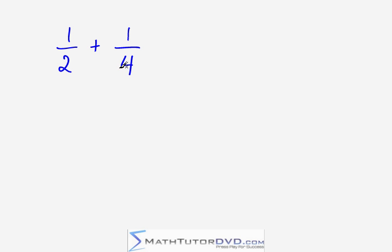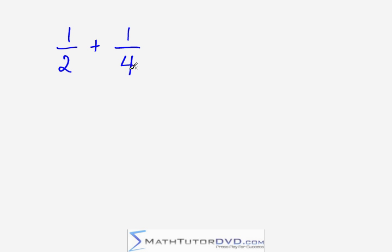Anytime you add or subtract two fractions, the number one rule that you need to know is that the denominator — which is the bottom number on these fractions — must be the same. So if they're not the same, you must make them the same before you can actually add or subtract them. What we need to do is figure out a way to make the denominators the same so that we can add them.